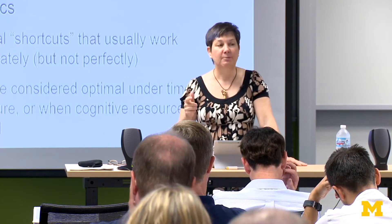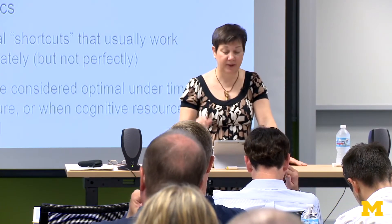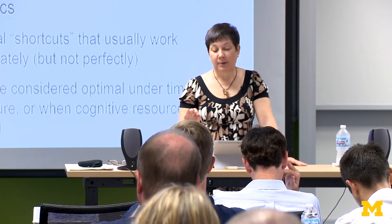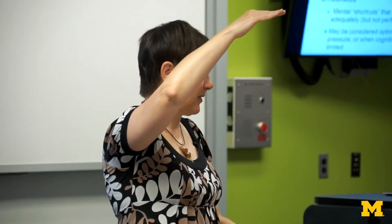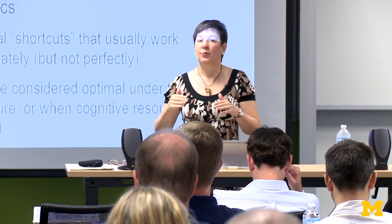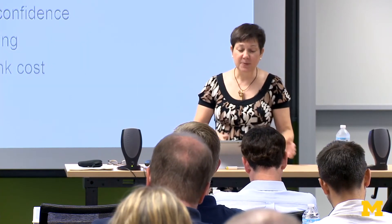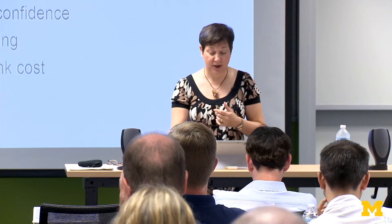Heuristics are usually functional, but sometimes they lead us down the garden path. There are lots and lots of biases — if you look up cognitive psychology and biases you'll get strings of them. I'm going to talk about a few to give you a flavor for things that influence us when we're not necessarily aware of it. Specifically, I'll talk about these five: fixation and anchoring, confirmation, salience, availability, overconfidence, and framing — and the related bias of sunk cost.